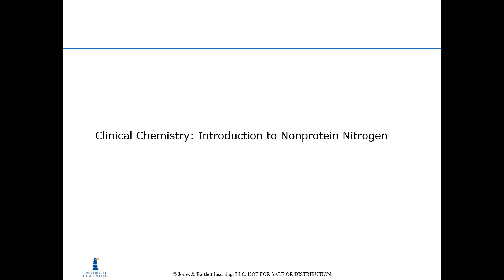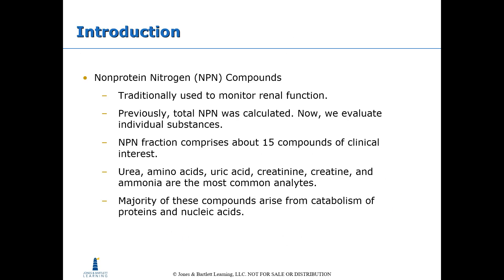Clinical chemistry introduction to non-protein nitrogen. Non-protein nitrogen, or NPN, compounds are traditionally used to monitor renal function. Previously, total NPN was calculated, but now we evaluate individual substances. The NPN fraction comprises about 15 compounds of clinical interest. Urea, amino acids, uric acid, creatinine, creatine, and ammonia are the most common analytes, and the majority of these compounds arise from catabolism of proteins and nucleic acids.